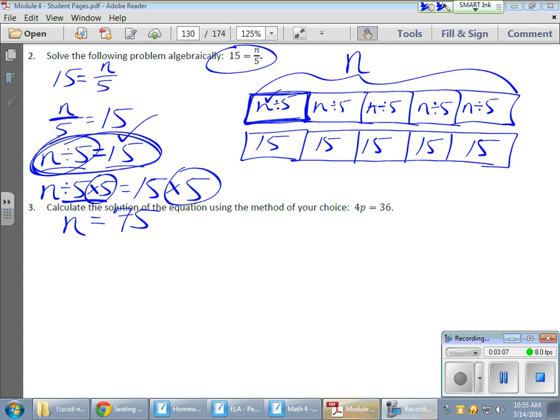So here's my 15 times 5, which is right here. So here's my 15 times 5, 5 fifteens. And here's my n divided by 5 times 5 because I have 5 of them: 1, 2, 3, 4, 5 n divided by 5s. And here are my 5 fifteens.